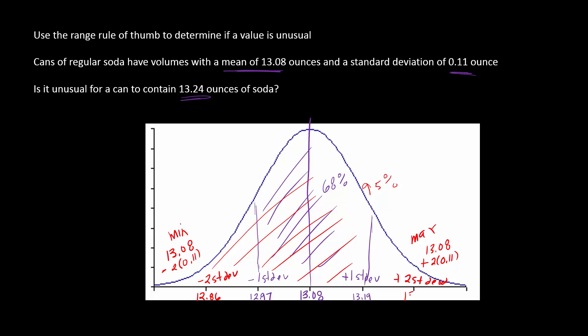Well, as you can see, this 13.24 is gonna fall somewhere in here below two standard deviations, so this would not be unusual. It would be very usual that you would expect. If you're within above or below two standard deviations, you would expect that 13.24 ounces of soda seems pretty usual.